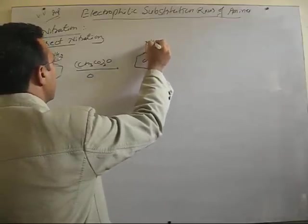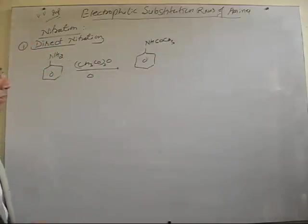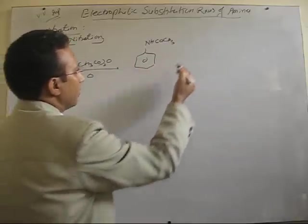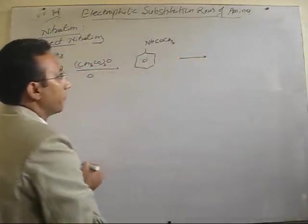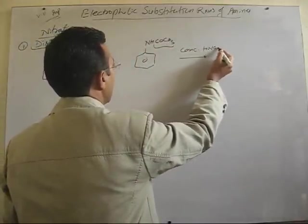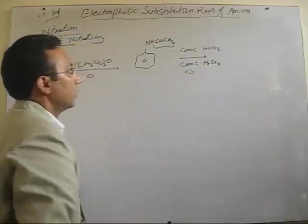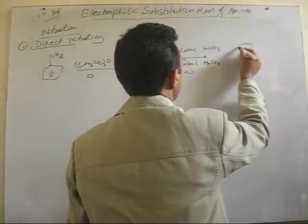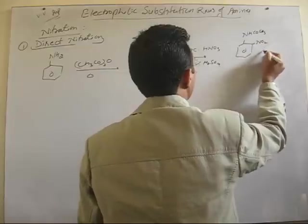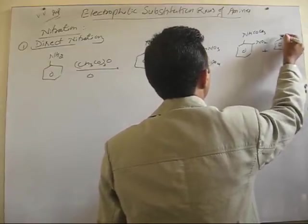When it undergoes acetylation using acetic anhydride or acid chloride, we have already discussed that it becomes less activating group and there is less availability of lone pair on nitrogen, and the ring is not that much activated. Now, once this acetylation is done, then further nitration is performed.